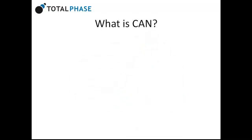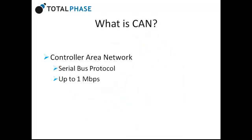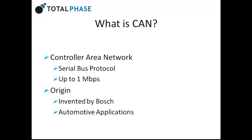CAN, or Controller Area Network, is a serial bus protocol that runs up to 1 megabits per second. It was originally created by the German automotive company Bosch. The focus was to make automotive applications more reliable and safe, while maintaining high data integrity. While CAN was originally created for the automotive industry, it has many other applications, such as industrial automation and medical equipment.